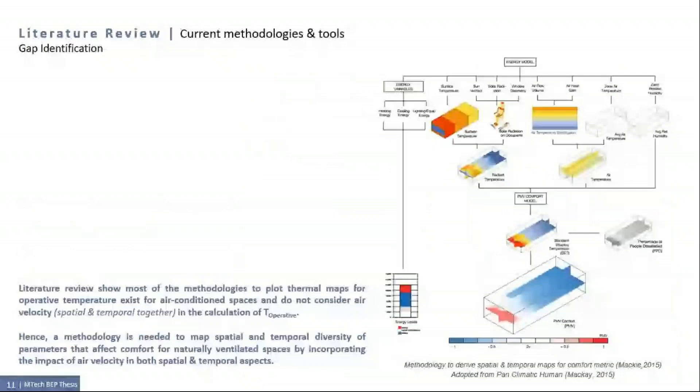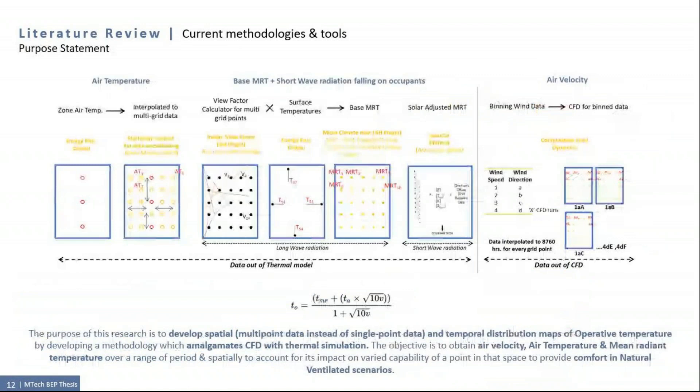So the literature review shows that most methodology to plot thermal maps for operative temperature exists for air conditioned spaces and do not consider air velocity in the calculation of operative temperature. Hence, a methodology is needed to map spatial and temporal diversity of parameters that affect comfort for naturally ventilated spaces by incorporating the impact of air velocity in both spatial and temporal ways. This brings us to the purpose statement of the research which is to develop spatial, which is multi-point data instead of single-point data, and temporal distribution maps of operative temperature by developing a methodology which amalgamates CFD with thermal simulation. The objective is to obtain air velocity, air temperature and mean radiant temperature over a range of periods and spatially to account for its impact on varied capability of a point in that space to provide comfort in natural ventilation scenarios.